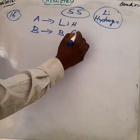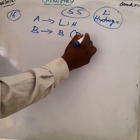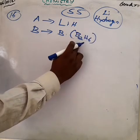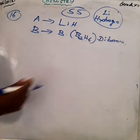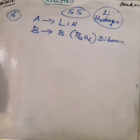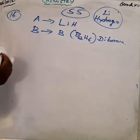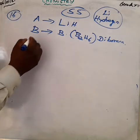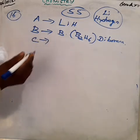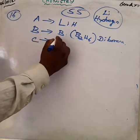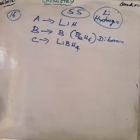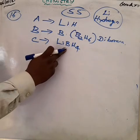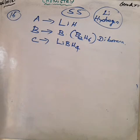The boron compound B is diborane. What is the formula of diborane? B₂H₆. This boron compound reacts with lithium hydride to give reducing agent C. One of the very good reducing agents is lithium borohydride, LiBH₄.